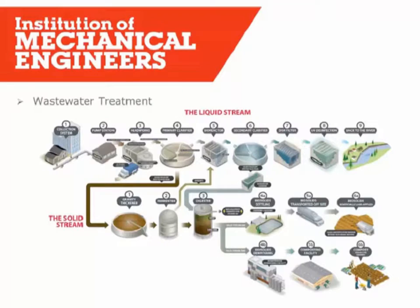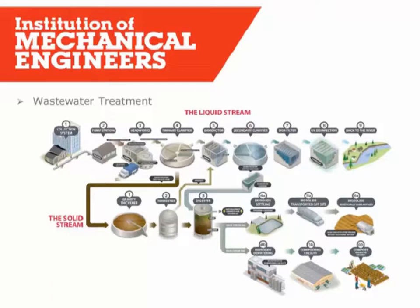Here we have a typical wastewater treatment process. The bit we're looking at is number three, labelled head works or inlet works. Essentially we have an upstream catchment of domestic or industrial sewage making its way to a treatment works, the first stage of which is the inlet works. The inlet screens are the most important thing at the head of the works - everything they take out protects the downstream processes in terms of efficiencies, maintenance, and damage prevention. I can't stress enough how important getting your inlet screens right is for the wastewater treatment process.